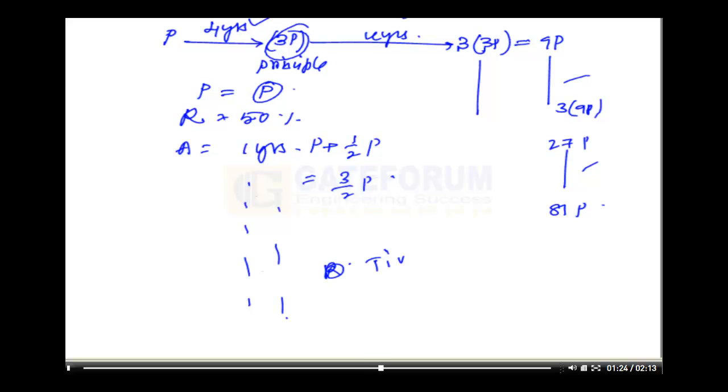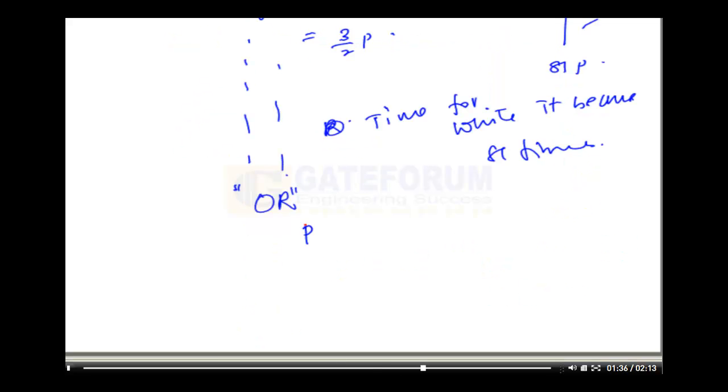Like this if we calculate the values you will get the time for which it will become 81 times. Initially let the amount be P, after certain number of years say T it is becoming 81 times of P. So initially it was P now it is 81P so there is an interest of 80P. Now you know the interest as 80P, you know the rate of interest as 50% and also you know the time as T. By using the formula I equals PTR by 100 we can calculate the value of T.